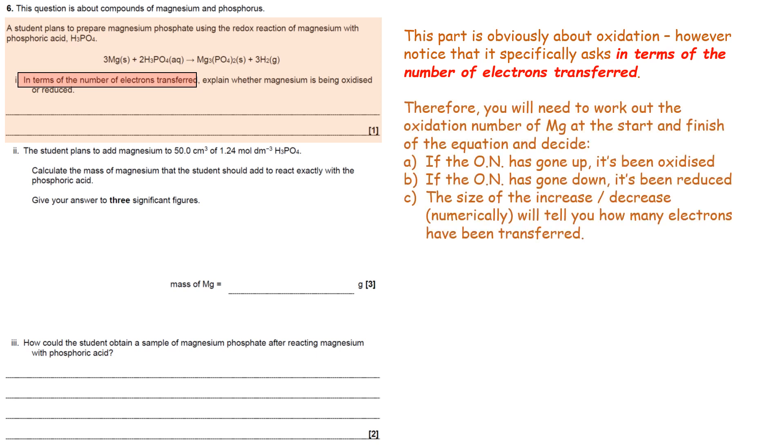So what you've got to work out is in the equation, what does the oxidation number of magnesium change from? And if it's gone up, it's been oxidized. If it's gone down, it's been reduced. And therefore, you can use your oxidation as loss, reduction as gain idea to tell you how many electrons have been transferred.